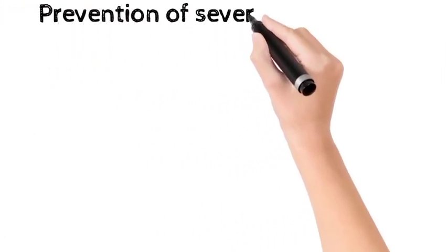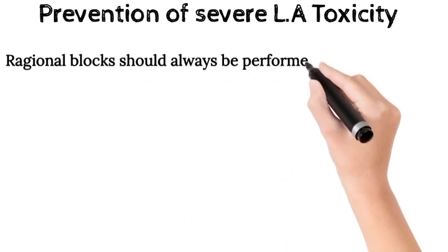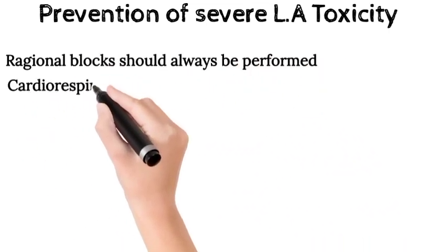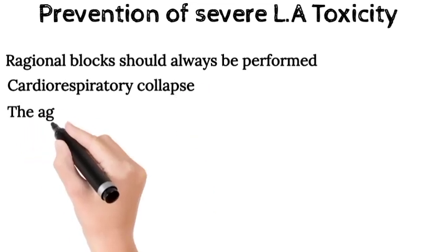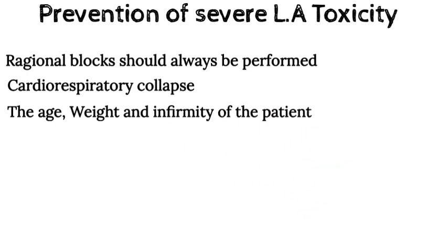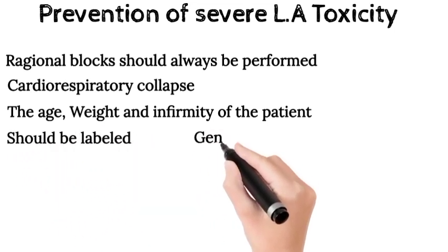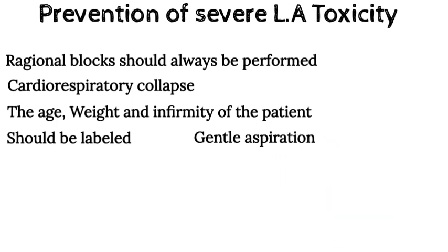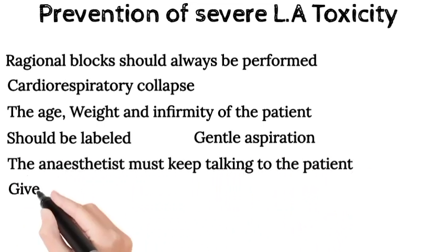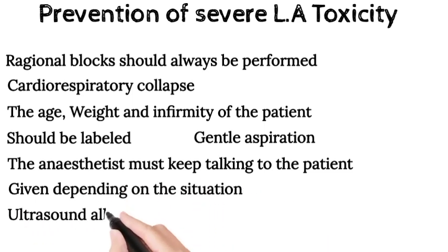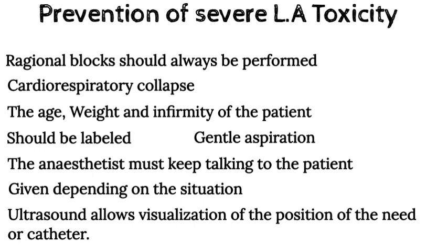Prevention of severe local anesthetic toxicity. Regional block should always be performed in an area equipped to deal with cardiorespiratory collapse, such as an anesthetic room or block room within the theater suite. The age, weight, and infirmity of the patient should be taken into account, and doses adjusted accordingly. Syringes of local anesthetic and perineural and epidural infusions should be labeled. Gentle aspiration of the syringe should precede every injection, both during and after drug administration. The anesthetist must keep talking to the patient. An appropriate test dose should be given depending on the situation. Ultrasound allows visualization of the position of the needle or catheter.